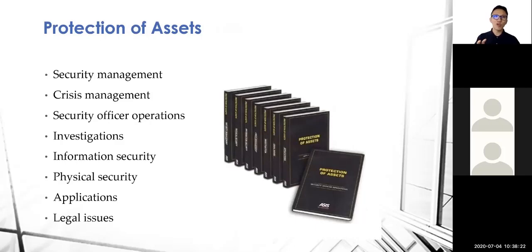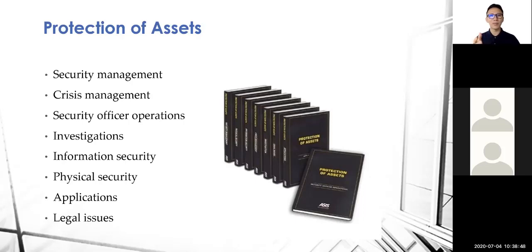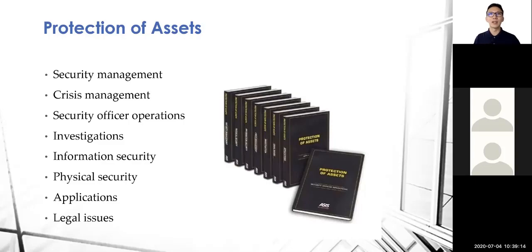All this knowledge can be learned from the Protection of Assets — the POA — which is the most important study reference for CPP preparation. You can buy it from acsonline.org. There are eight books in total, including one specifically on security management. Note that the seven CPP domains don't map exactly to the volumes; for example, there is no separate personnel security volume — that content is scattered across multiple books, such as the investigations volume which covers background investigations.